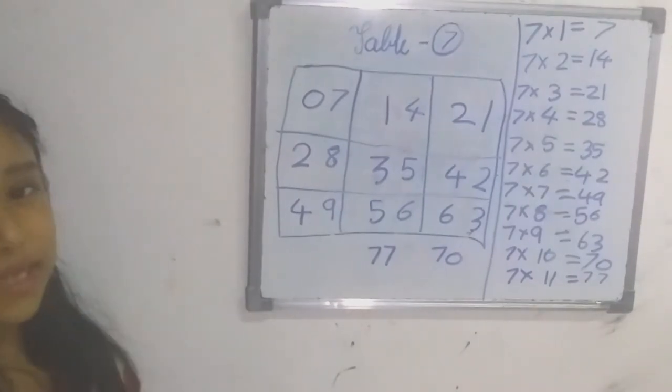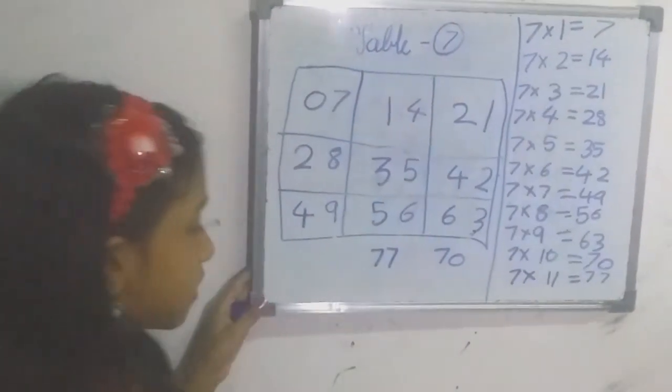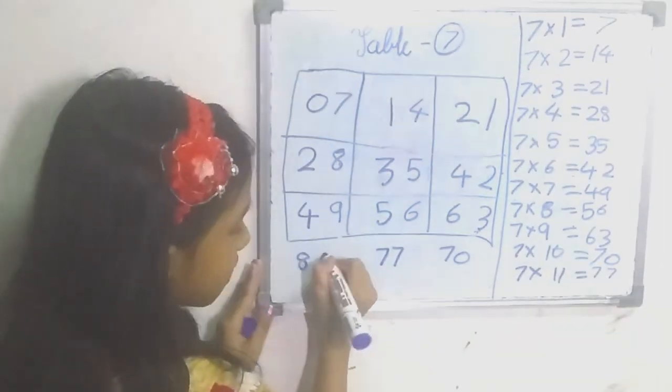And for 12, which is too difficult, the answer is 84.